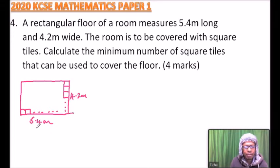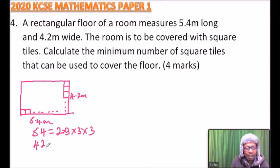We get 54, and we write it in terms of its factors: 2 × 3 × 3 × 3. Then we do the same with 4.2, we get 42, which is 2 × 3 × 7.